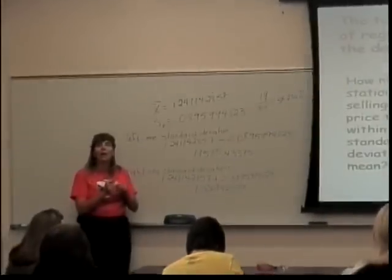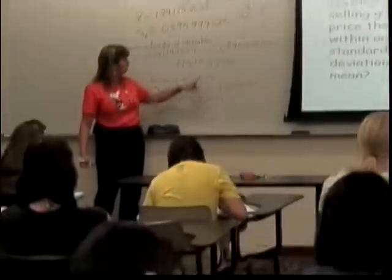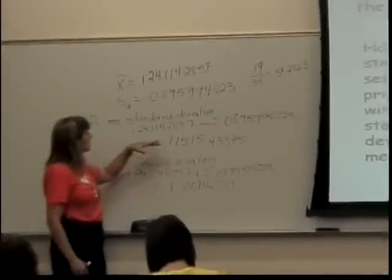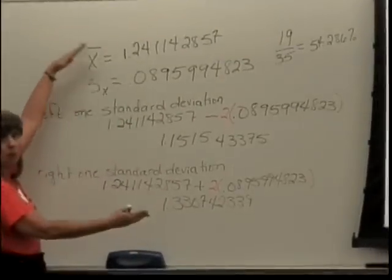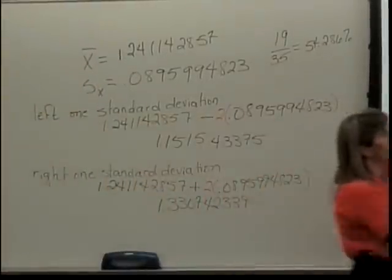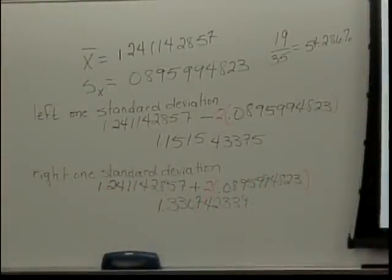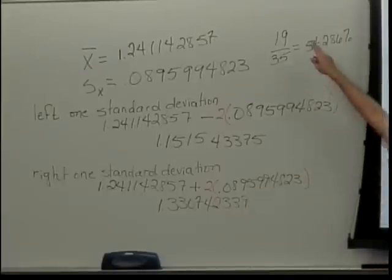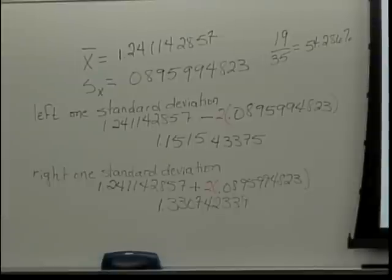And then if I ask for three standard deviations, this two can become a three. What's going to happen is this is going to spread things out more, and so I will include more of the prices, which will then encompass more of the stations. So these stations determine what number goes on top, but I use the prices to figure out which numbers to keep, which ones to add together.